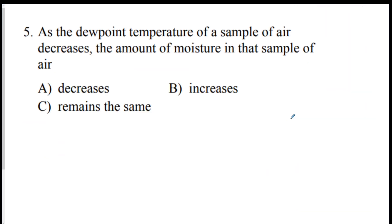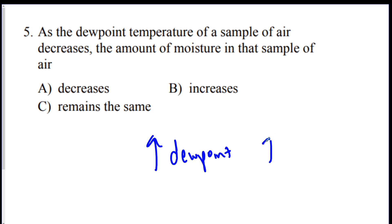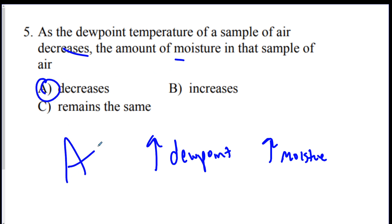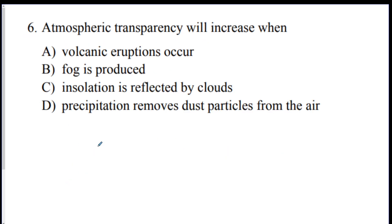Number five: as the dew point temperature decreases, what happens to the amount of moisture in that air sample? We said dew point reflects moisture content — higher dew point means higher moisture. So if dew point is decreasing, the amount of moisture decreases. It's a direct relationship.